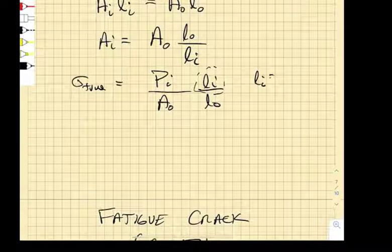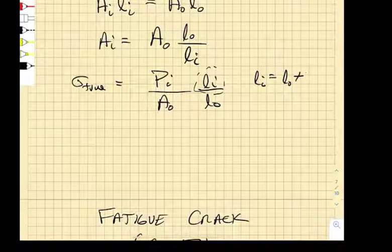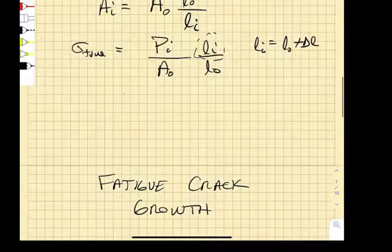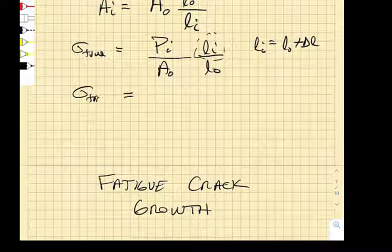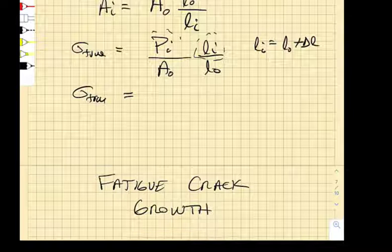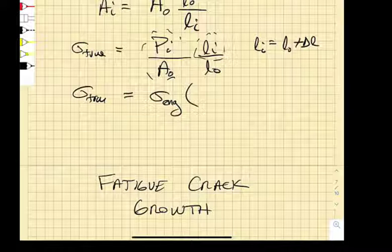Well, LI is just going to be the original gauge length plus some delta L. So it turns out that the true stress is going to be PI over A0, that's the engineering stress, multiplied by,